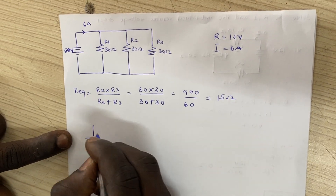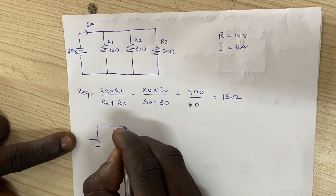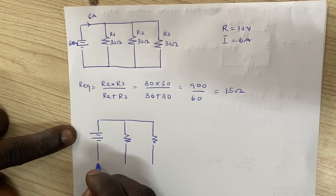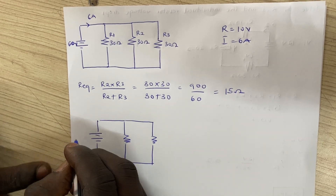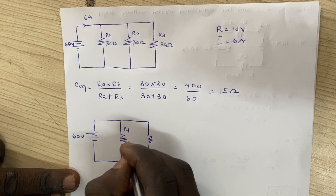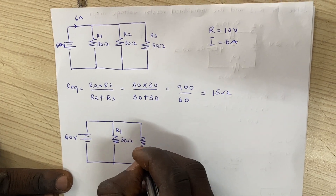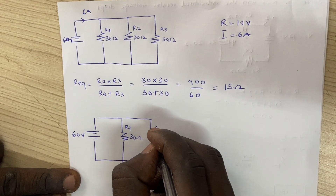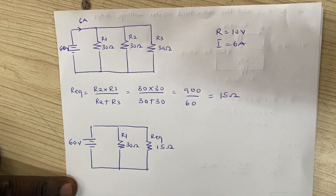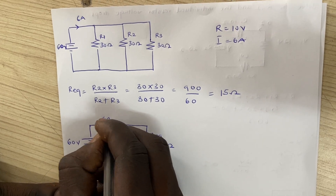So when we get 15 ohms, our circuit now looks like this: the voltage remains unchanged at 60 volts, R1 remains unchanged at 30 ohms, and R2 and R3 are replaced by their equivalent of 15 ohms. Our total current of 6 amps flows through the circuit.